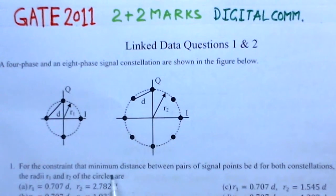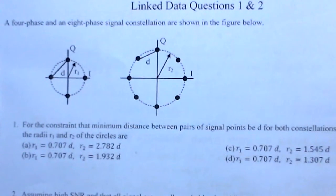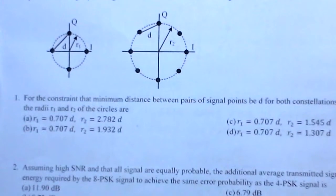For the constraint that minimum distance between pair of signal points be d for both constellations, the radii R1 and R2 of the circles are given. There are 4 options here for the radii of these constellation circles and we have to get the right answer.